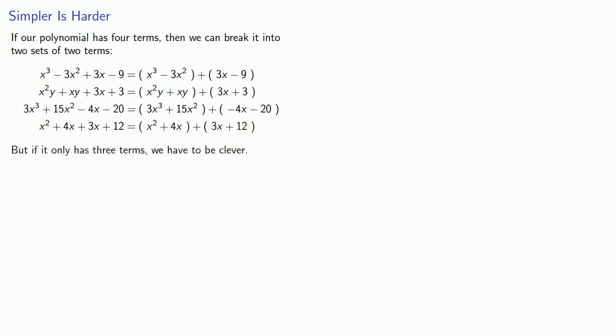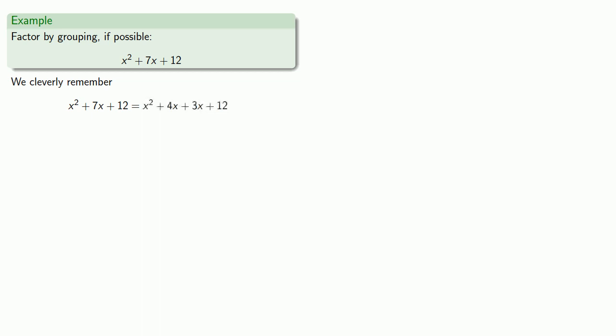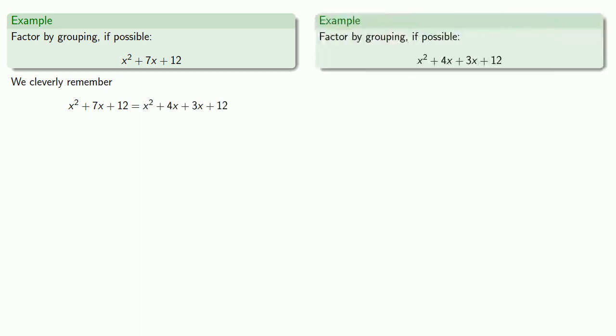But if our polynomial only has three terms, we have to be clever about it. So let's say we want to factor by grouping, if possible, x squared plus 7x plus 12. We can't simply group the first two terms because then we'd only have one term left. So we cleverly recognize that x squared plus 7x plus 12 is really x squared plus 4x plus 3x plus 12, and we've already figured out how to factor that.